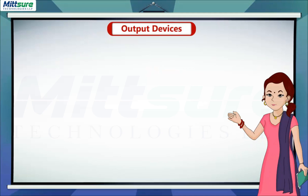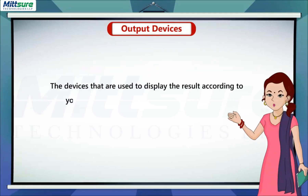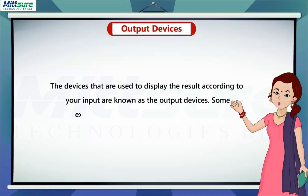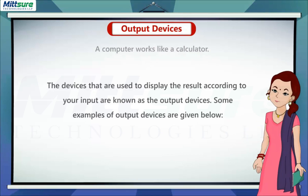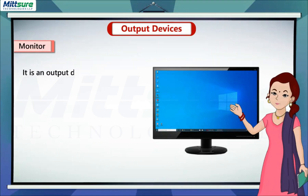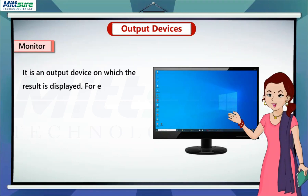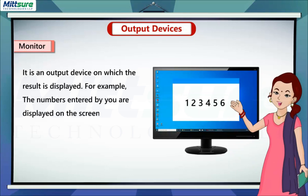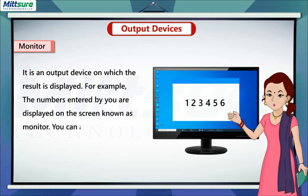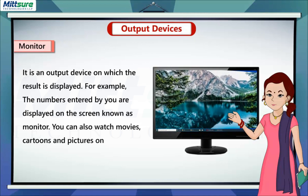Output Devices: the devices that are used to display the result according to your input are known as output devices. Some examples are given below. Monitor: it is an output device on which the result is displayed. For example, the numbers entered by you are displayed on the screen known as the monitor. You can also watch movies, cartoons, and pictures on a monitor.